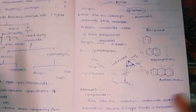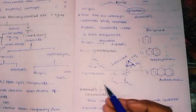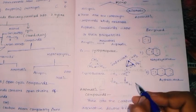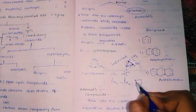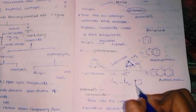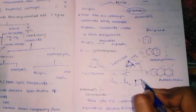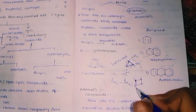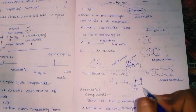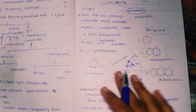One more example: cyclobutane. Cyclo — it should be in a closed form. Here we have four carbons: carbon, carbon, carbon, carbon. And to balance, each is CH2. This is cyclobutane.